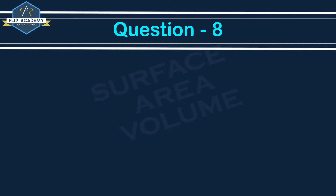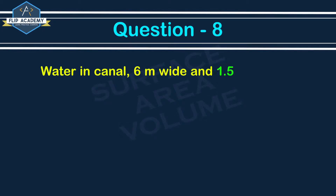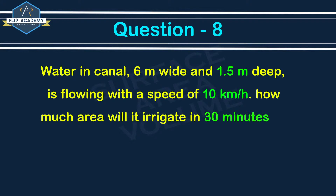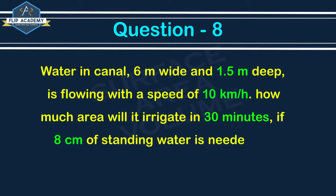Surface area and volume, exercise 13.3, question number 8: Water in a canal 6 meters wide and 1.5 meters deep is flowing with a speed of 10 km per hour. How much area will it irrigate in 30 minutes if 8 cm of standing water is needed?